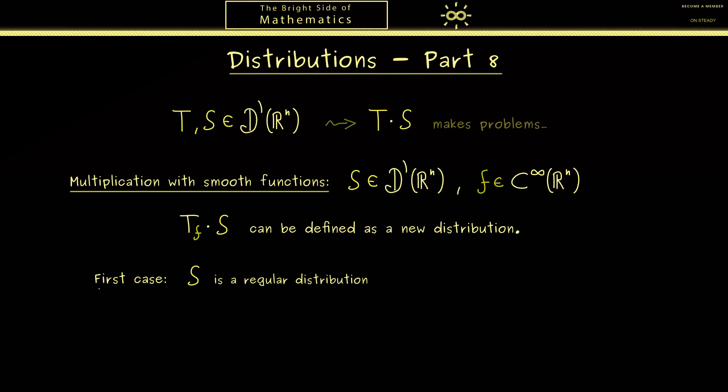And maybe we should first discuss the case that S is given by a regular distribution. This means that S can be written as T_g, where the function g is locally integrable. Hence we first talk about the product T_f times T_g.